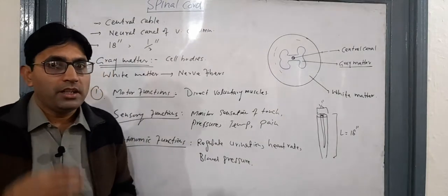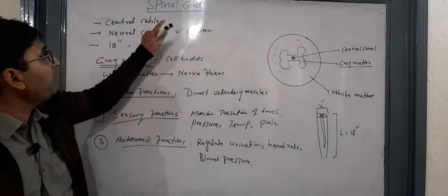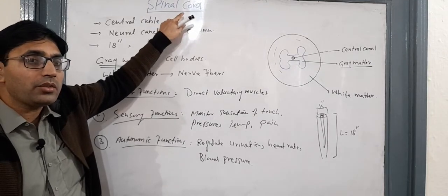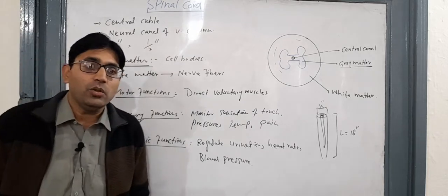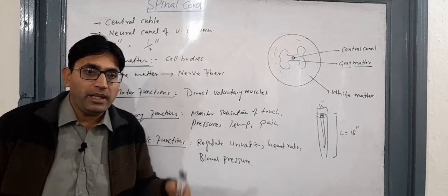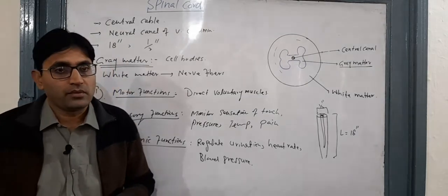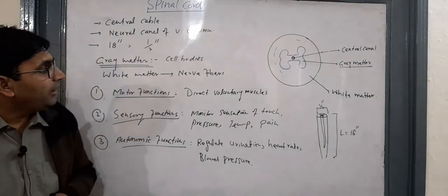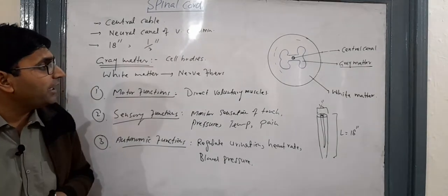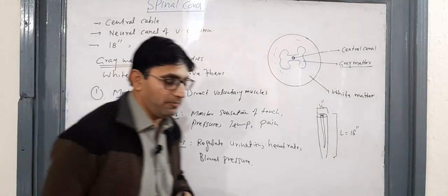The spinal cord is also responsible for communicating the brain with different parts of the body. We cannot ignore the functions of the spinal cord because all parts of our body are connected to the brain through the spinal cord.